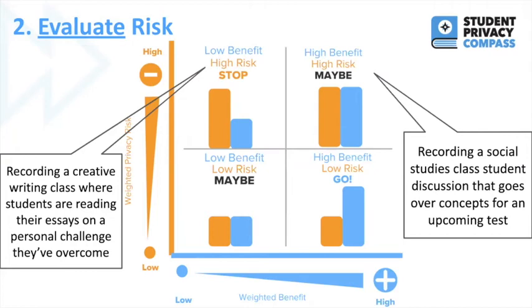On the other hand, consider recording a social studies class student discussion that goes over concepts for an upcoming exam. This is probably high benefit and high risk. High benefit because students would want to rewatch the recording to study and prepare, and there's a definite learning benefit to having concepts explained by peers rather than just the teacher. The risk is that students are being recorded — whether just audio or with video on — and they might not feel as free to ask questions, participate, or state views on controversial topics. In this scenario, we would definitely want to reduce the risk while maintaining the high benefit.